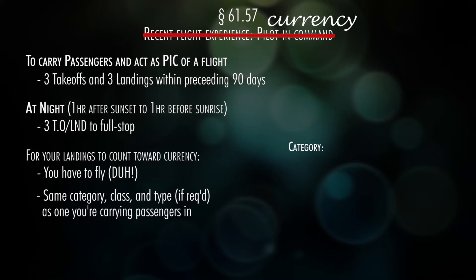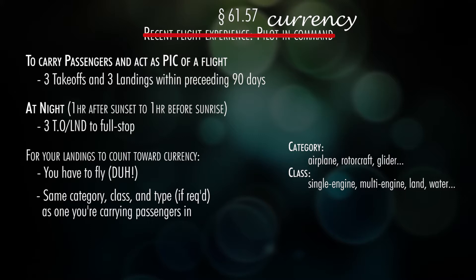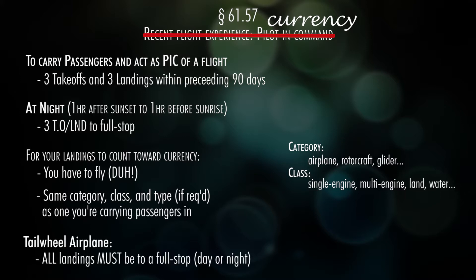Category means airplane, rotorcraft, glider, lighter than air, etc. Class means single-engine, multi-engine, etc. So if you're flying a single-engine airplane, all your currency landings have to be in a single-engine airplane. Also, if you're flying a tailwheel airplane, all those landings have to be to a full stop, day or night.